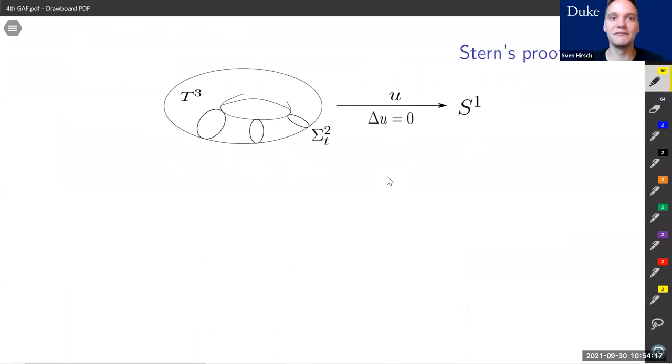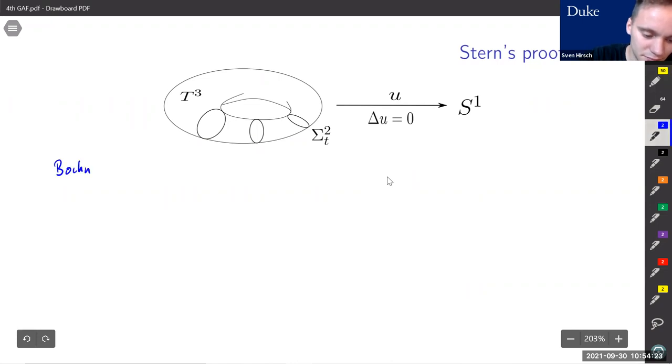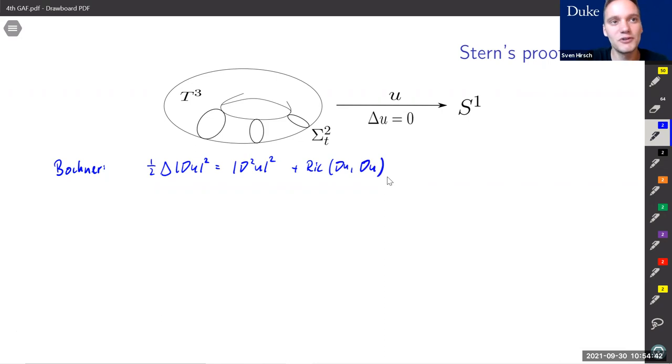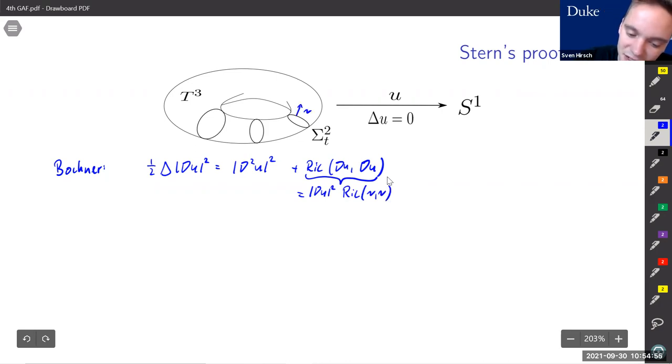We have three ingredients. The first ingredient is Bochner's formula, which tells us that one half Laplacian of norm gradient u squared equals the Hessian of u squared plus the Ricci curvature of gradient u, gradient u. Now the crucial observation: this Ricci curvature term can be expressed as gradient u squared times the Ricci curvature in the normal-normal direction, where nu is the normal to our level set Sigma_t.